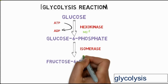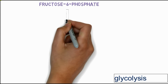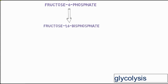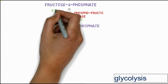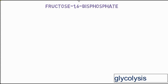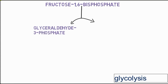Fructose-6-phosphate is converted into fructose-1,6-bisphosphate by the phosphofructokinase enzyme, which contains Mg²⁺ as a cofactor. In this reaction, one ATP molecule is utilized and converted into ADP.